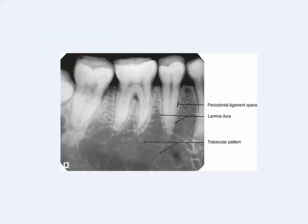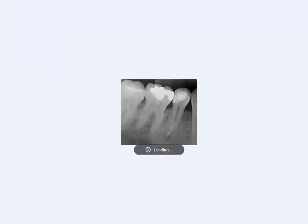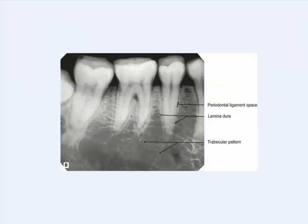Hello viewers, welcome to Life in Dental Care. I am Dr. Ramath Aronsen. In this video I will talk about the periapical X-ray and the normal anatomical structures of a periapical X-ray. This is a small size X-ray of teeth and their associated supporting structures, called intraoral periapical X-ray or IOPA. This IOPA is an essential and cost-effective diagnostic tool for dental surgery.